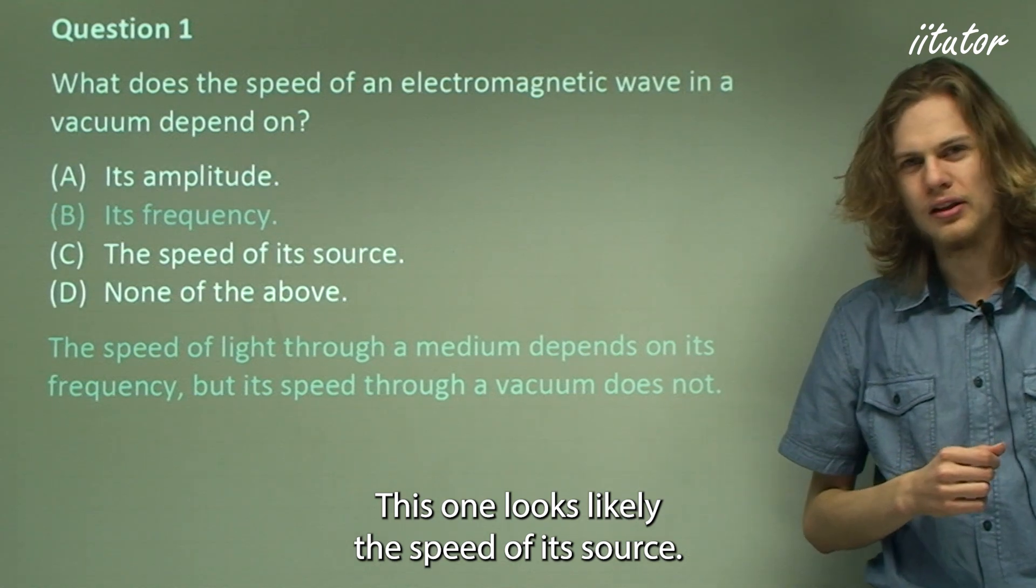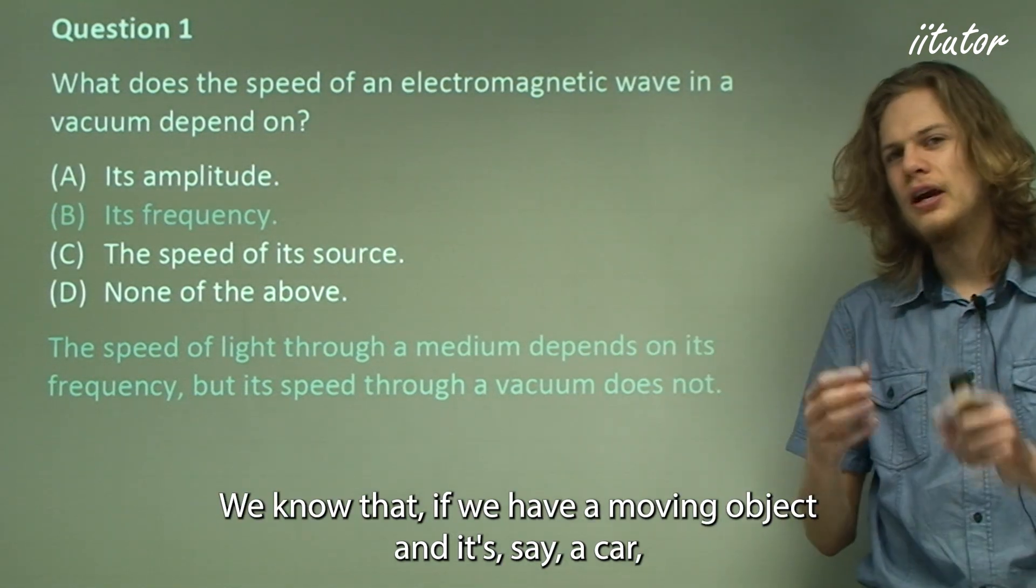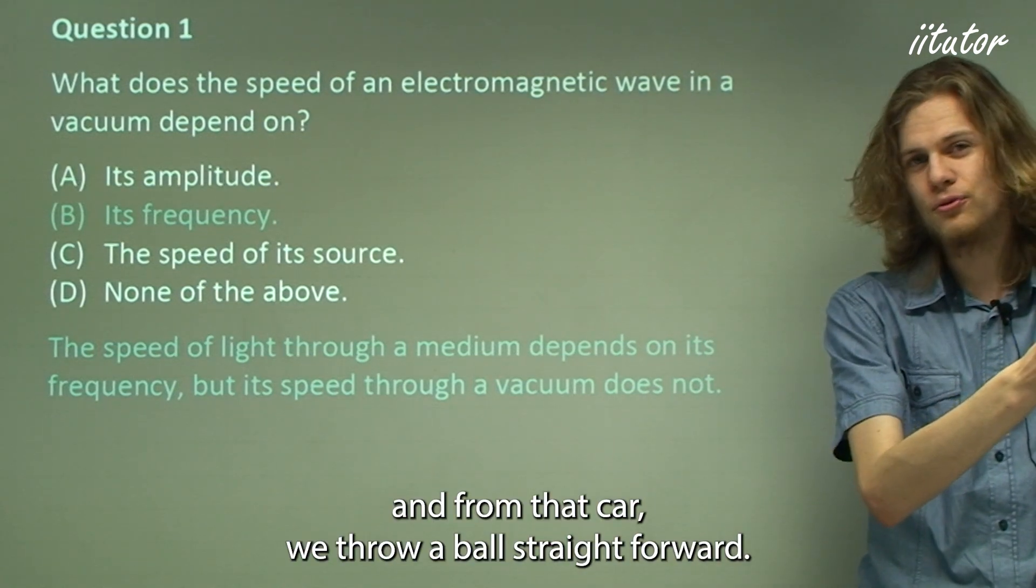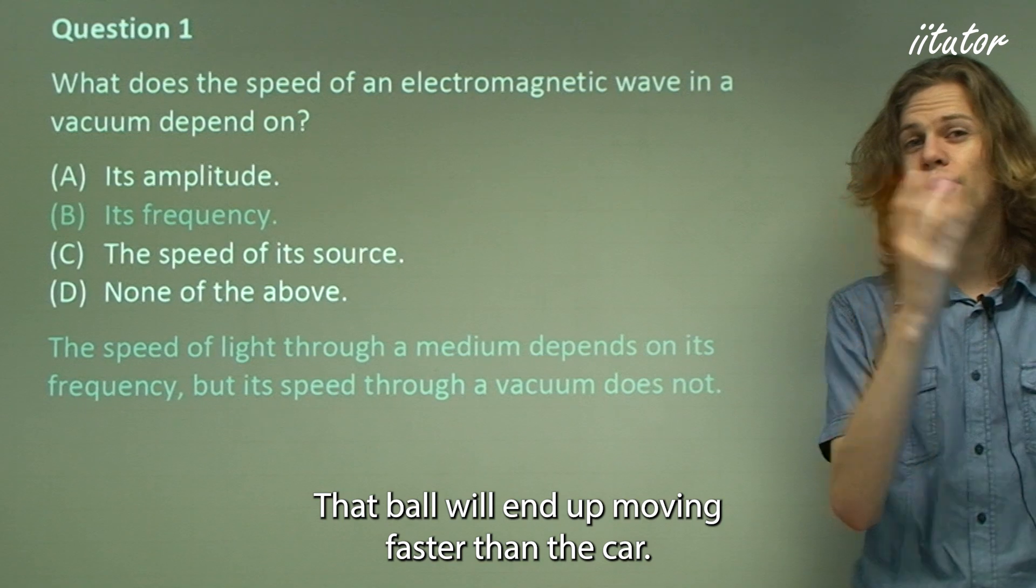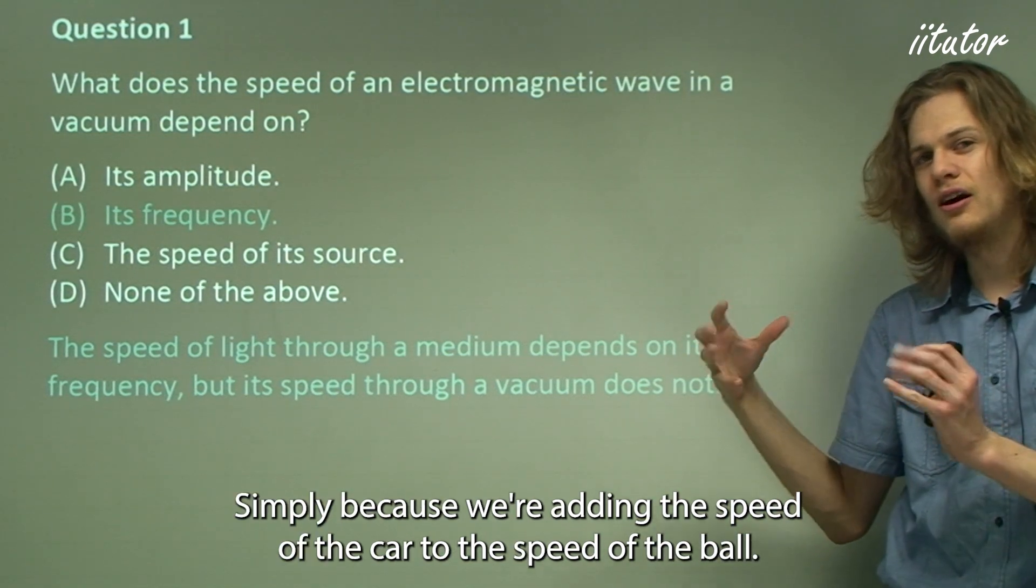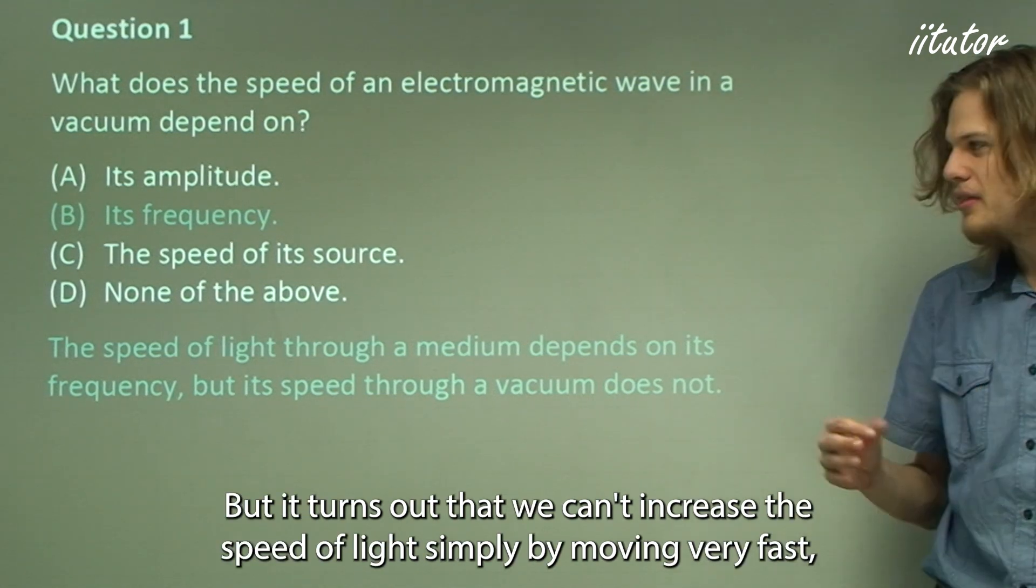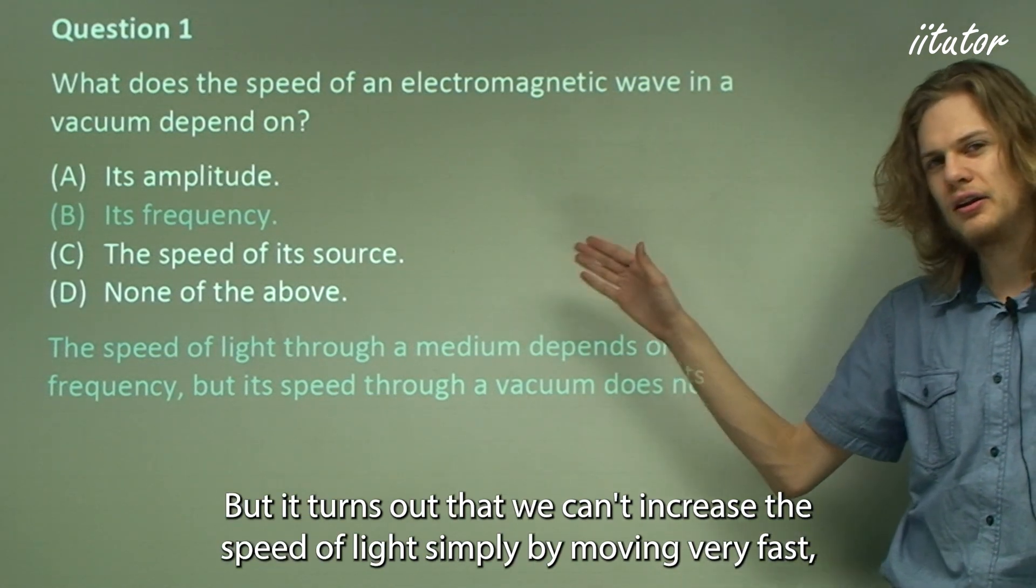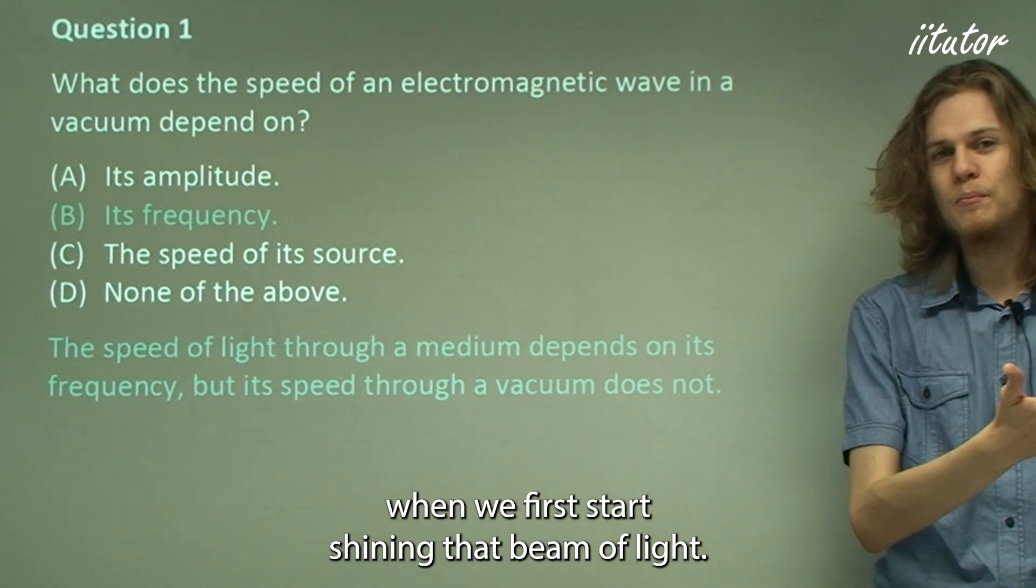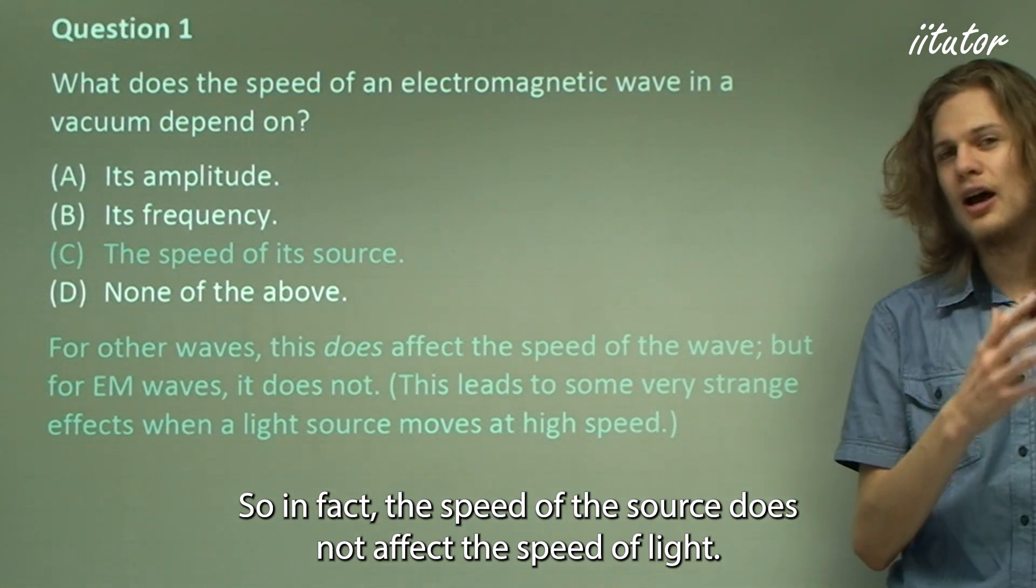How about C? This one looks likely. The speed of its source. We know that if we have a moving object, say a car, and from that car we throw a ball straight forward, that ball will end up moving faster than the car simply because we're adding the speed of the car to the speed of the ball. We've learned a bit about this in relative motion. But it turns out that we can't increase the speed of light simply by moving very fast when we first start shining that beam of light. So in fact the speed of the source does not affect the speed of light.